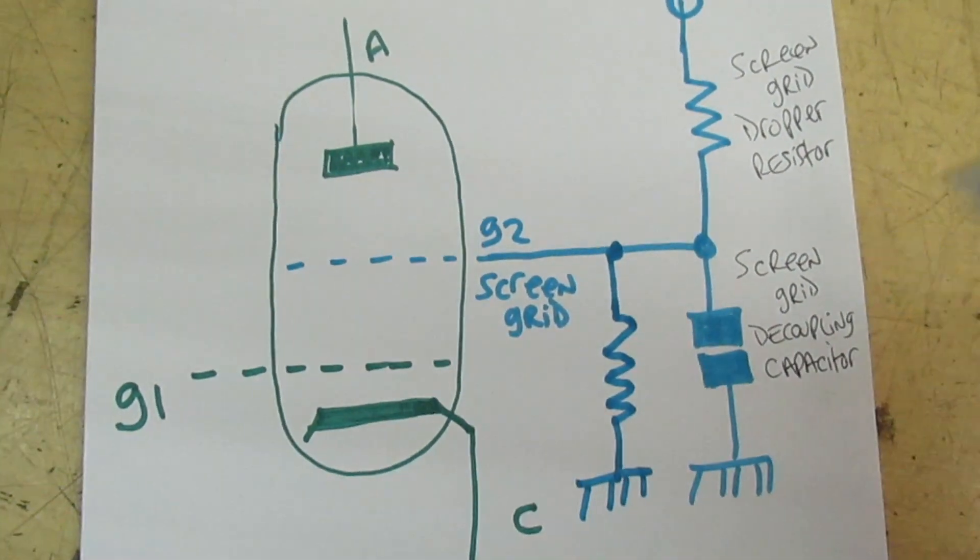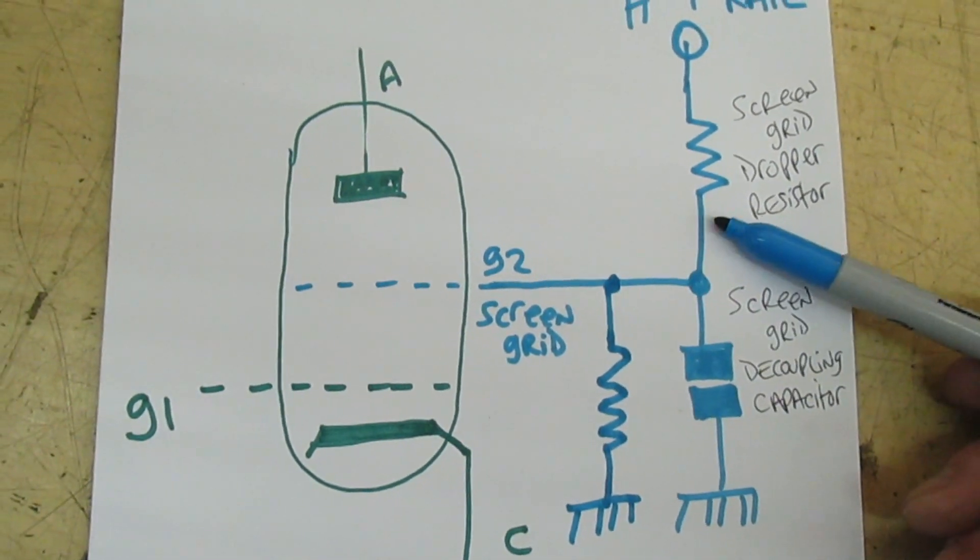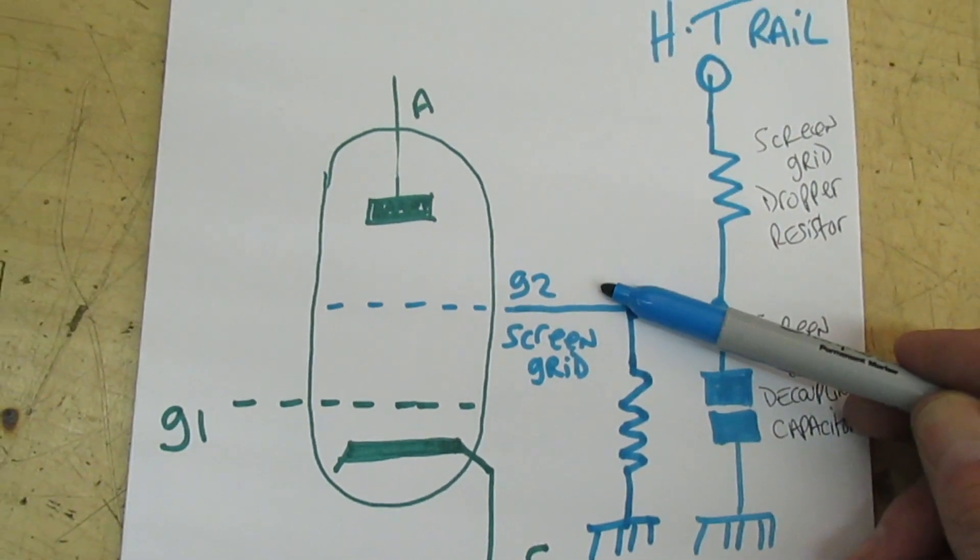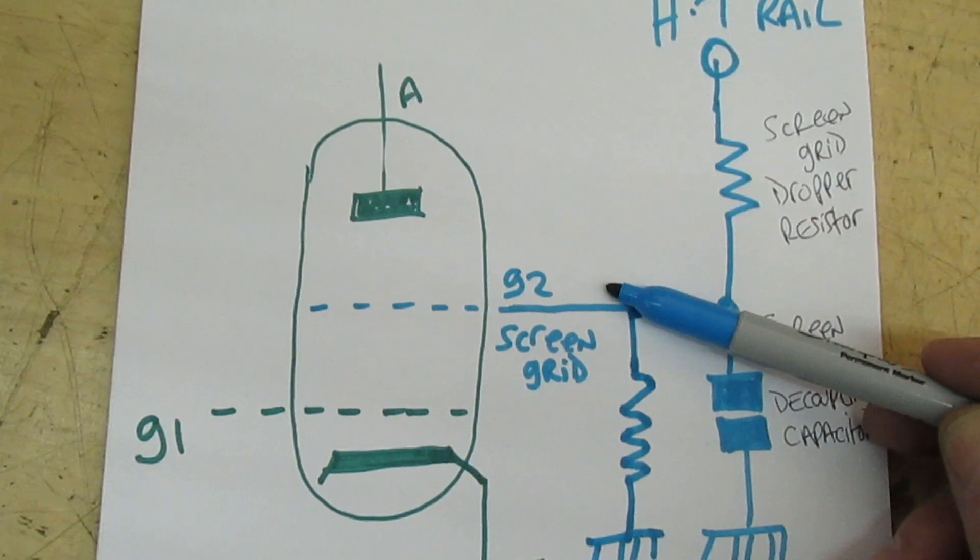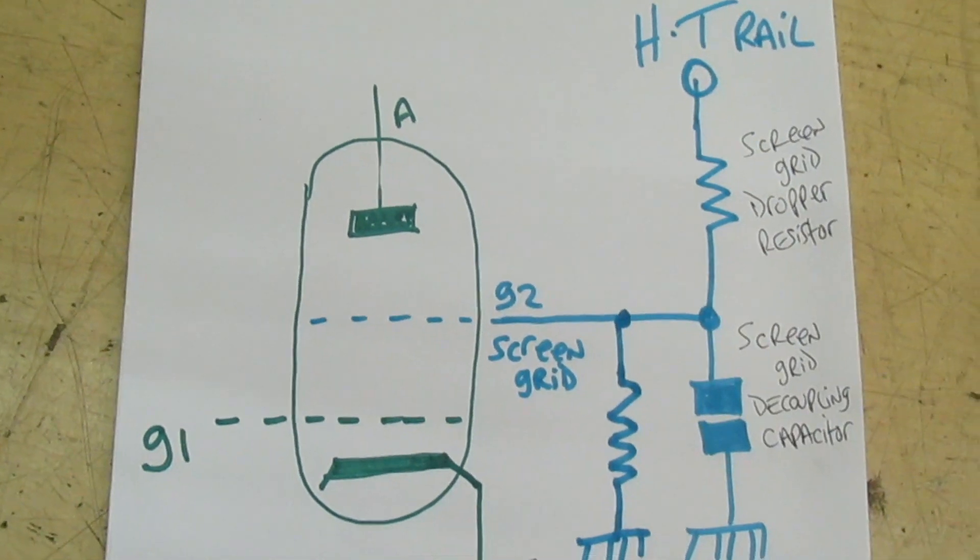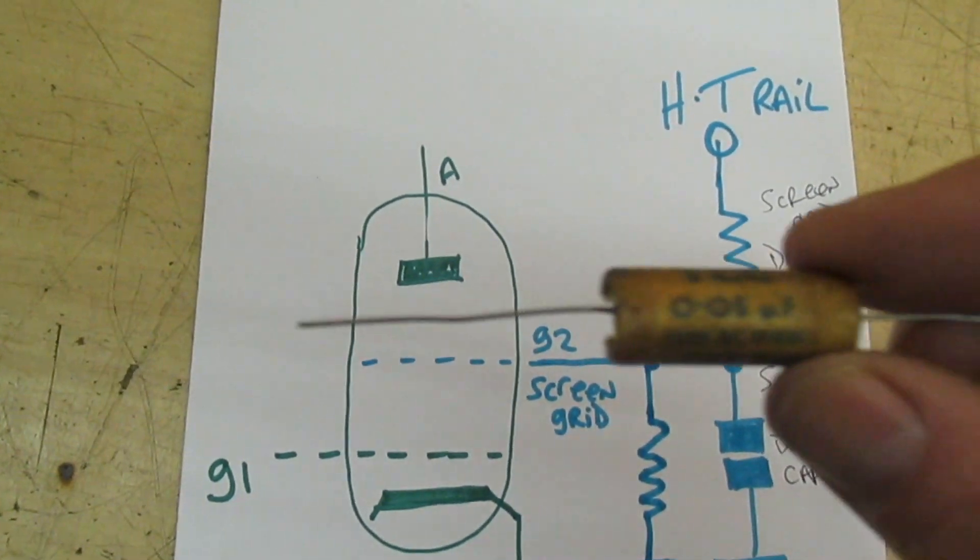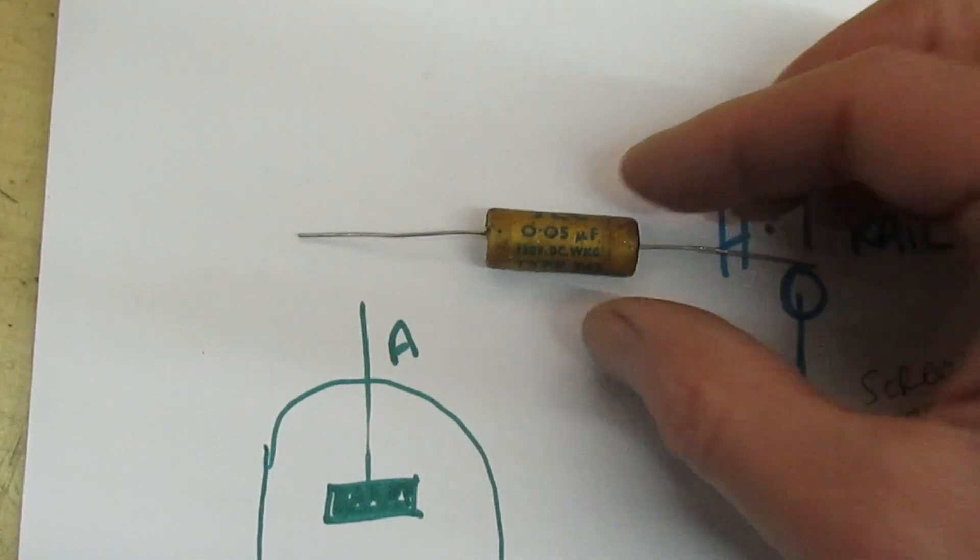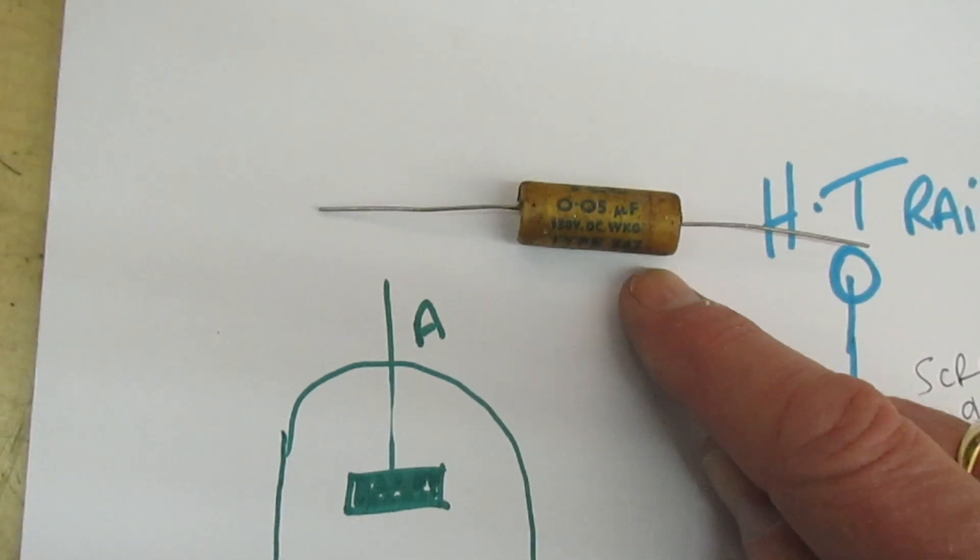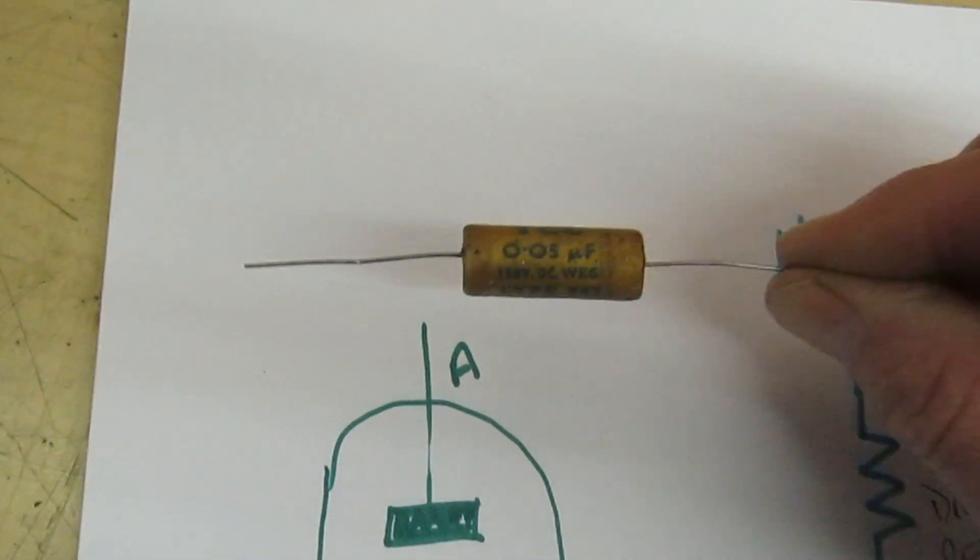If we draw a leaky wax paper capacitor into this circuit, if that's leaking we've just got a resistance there, and those two resistances actually form a potential divider and pull down the voltage on the screen grid. That's why your radio either loses sensitivity, or if it pulls it down too low the valve cuts off altogether and you don't get any reception at all. That's why it's most important to change all these wax paper capacitors regardless of whether they're faulty or not, but I've never actually seen a working one yet.